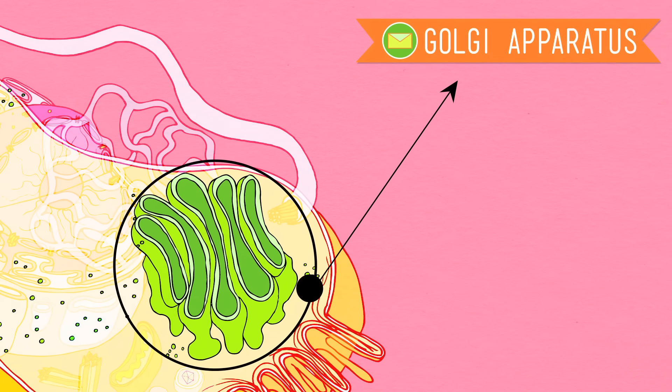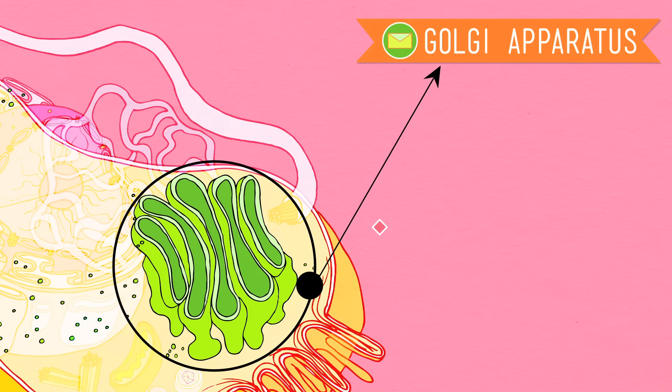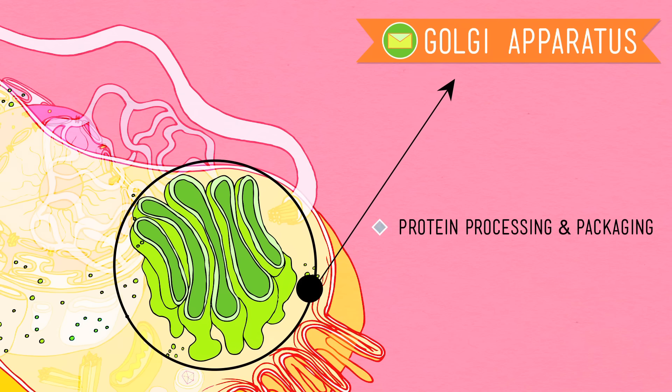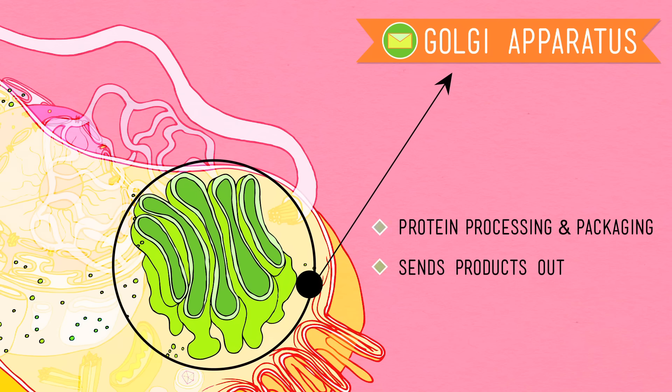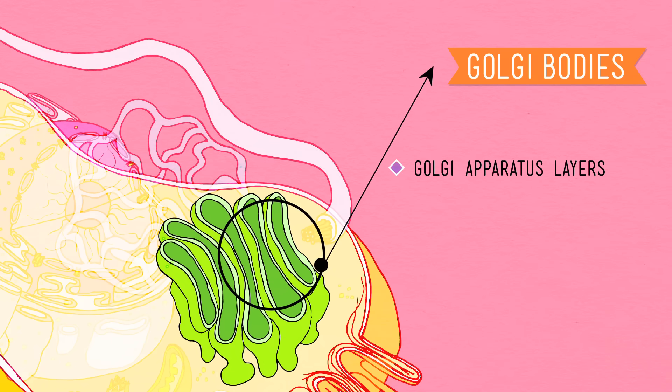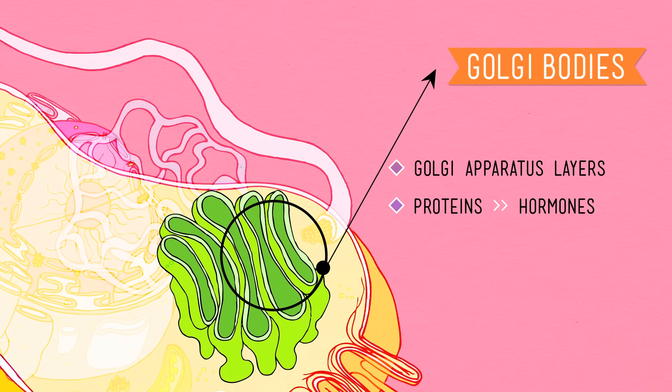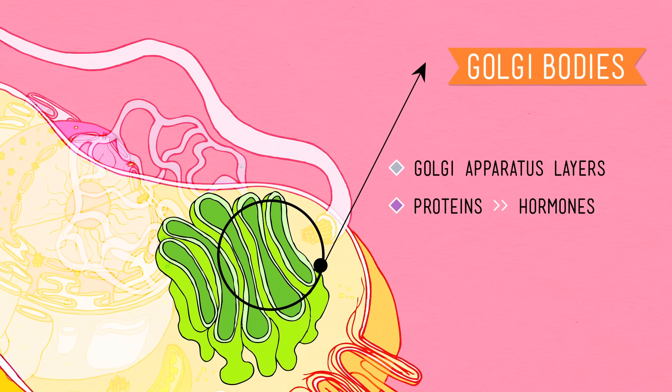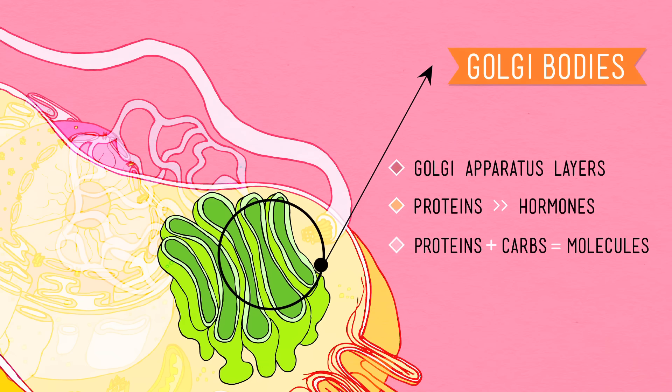In the city that is the cell, the Golgi is the post office, processing proteins and packaging them up before sending them wherever they need to go. Calling it an apparatus makes it sound like a bit of complicated machinery, which it kind of is because it's made up of like these stacks of membranous layers that are sometimes called Golgi bodies. The Golgi bodies can cut up large proteins into smaller hormones and can combine proteins with carbohydrates to make various molecules, like for instance, snot.